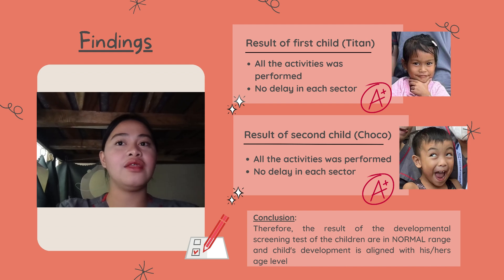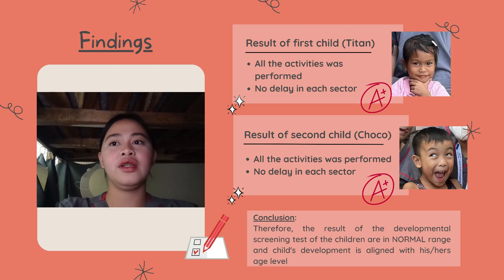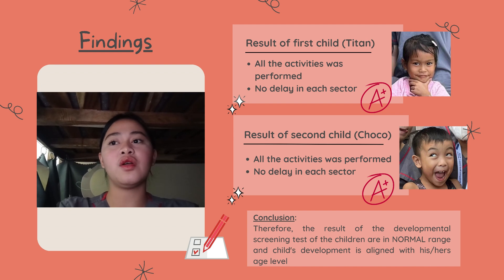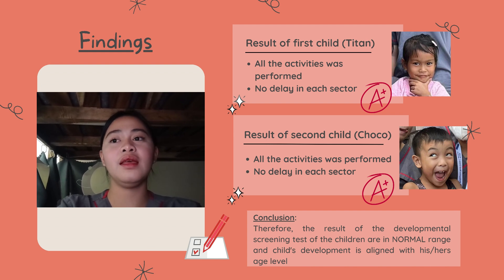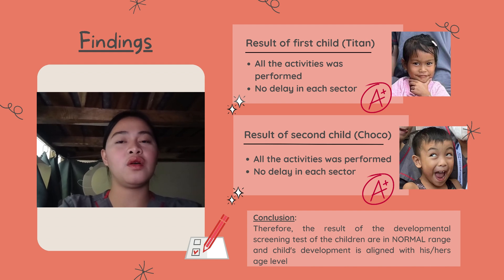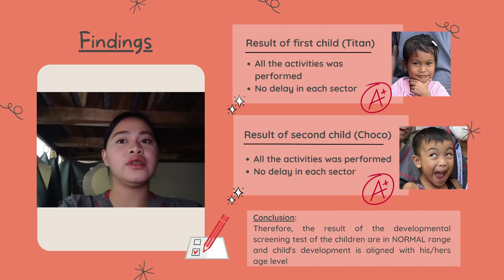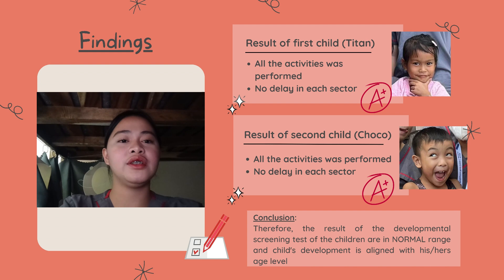For the first client, language results show she passed three items: comprehending cold, tired, and hungry; understanding three prepositions — in, on, and under; and answering the given opposite analogies. For gross motor, she passed three items: balanced on one foot for ten seconds, hops on one foot, and catching a ball. The MMDST result was normal because she passed all twelve tests given to her, and all activities were successfully performed. Therefore, the child's development is aligned with her age level.